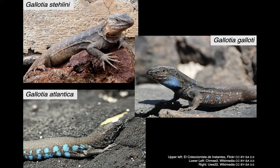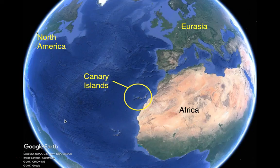The first handout is on the biogeography of lizards. There are three species of lizards that are important for this study. They are Galodia stellini, Galodia galodi, and Galodia atlantica. These three species of lizards are found on the Canary Islands, off the northwest coast of Africa in the eastern Atlantic Ocean.